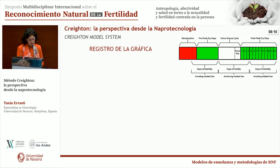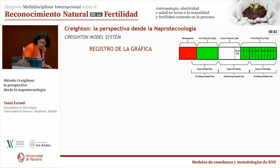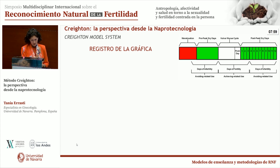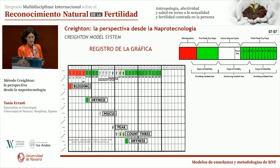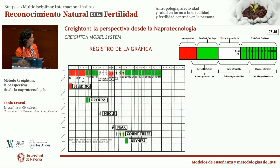The registry chart, as in Billings as well, uses color coding: menstruation days in red, dry days in green, and mucus days in white with a small child symbol. This is very similar to the Billings method.